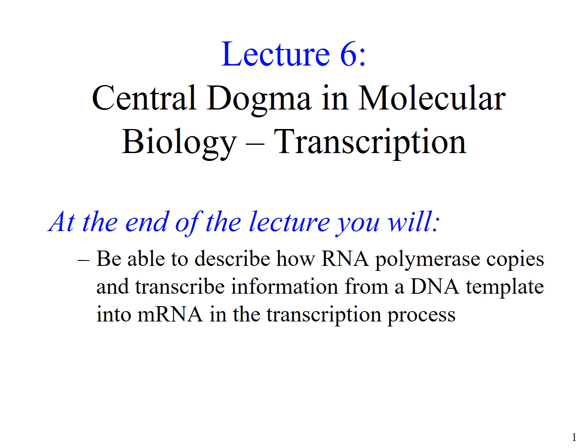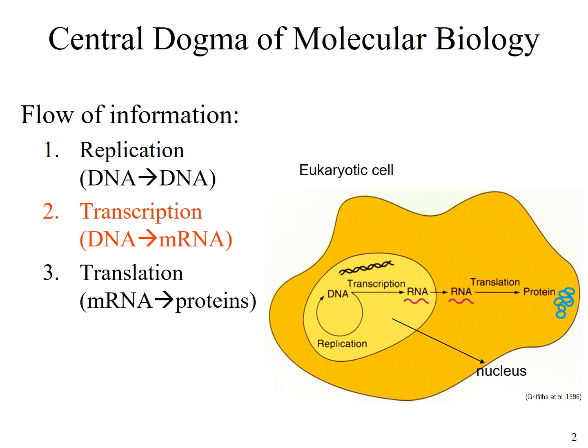Next week, we will look at how this messenger RNA is then translated into proteins. The central dogma of molecular biology describes how information flows in the cells. Information in the DNA can be replicated into another DNA, or transcribed onto a messenger RNA, which can then be translated to make proteins.